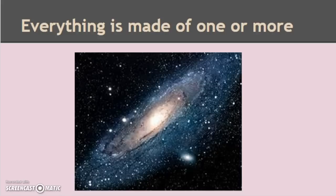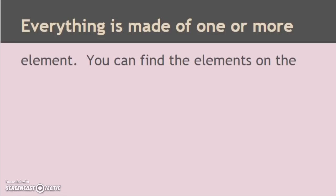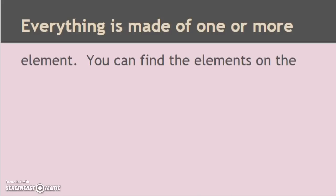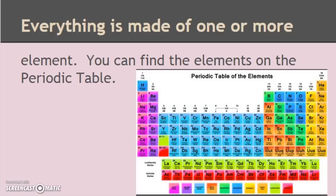Everything is made of one or more elements. Everything in the entire universe, anything you can see or feel, is made of the elements, and you can find the elements on the periodic table. You are made of hydrogen, carbon, nitrogen, oxygen, phosphorus, and of course some other elements as well.